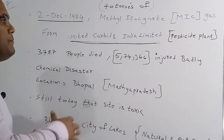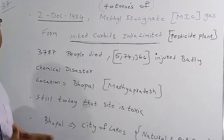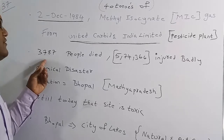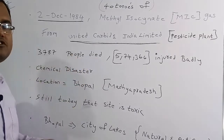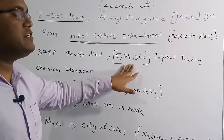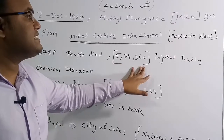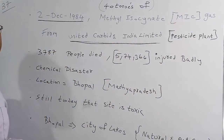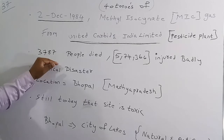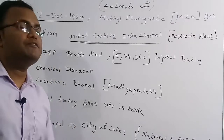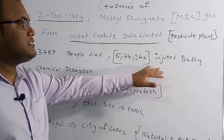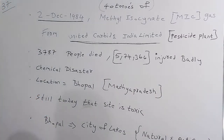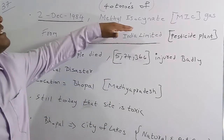Because of this gas leakage, people around the plant were severely affected. Nearly 3,787 people died and nearly 574,366 people were very badly injured due to this disaster.